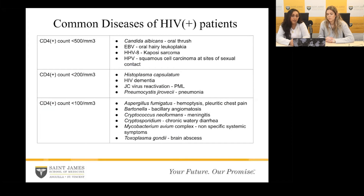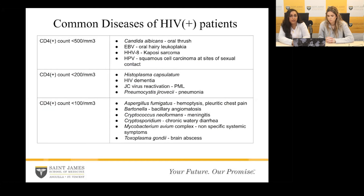With a CD4 count less than 200, patients are predisposed to Histoplasma capsulatum (a fungal infection), HIV dementia, JC virus reactivation leading to PML, or Pneumocystis jirovecii causing pneumonia. If the CD4 count continues to drop, they become predisposed to Aspergillus fumigatus causing hemoptysis and pleuritic chest pain, Bartonella causing bacillary angiomatosis, Cryptococcus neoformans predisposing to meningitis, Cryptosporidium causing chronic watery diarrhea, Mycobacterium avium complex with nonspecific symptoms, or Toxoplasma gondii which can lead to brain abscesses.